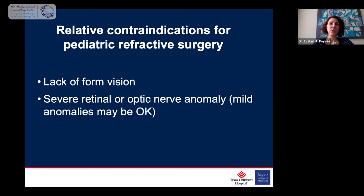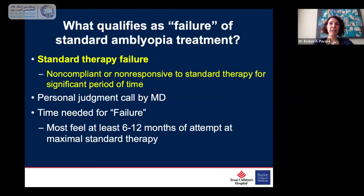Relative contraindications include the lack of form vision — if you have a really severely hypoplastic optic nerve, you shouldn't do PRK. However, if a patient has mild cortical visual impairment or mild optic nerve anomaly but is fixating and following, those are patients you could still consider treating. What is the definition of 'failure to standard amblyopia therapy'? I make patients truly fail a significant period — they must be non-compliant or non-responsive to standard therapy, including patching or atropine, and refractive correction with contacts or glasses. They need to fail at least six months, but I've almost never treated anyone that quickly. It's at least one year of maximum standard therapy before I'll treat.